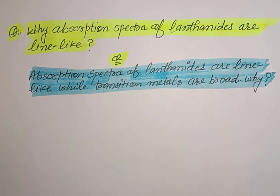The next important question is: why are the absorption spectra of lanthanoids line-like, while the absorption spectra of transition metals or d-block elements are broad?